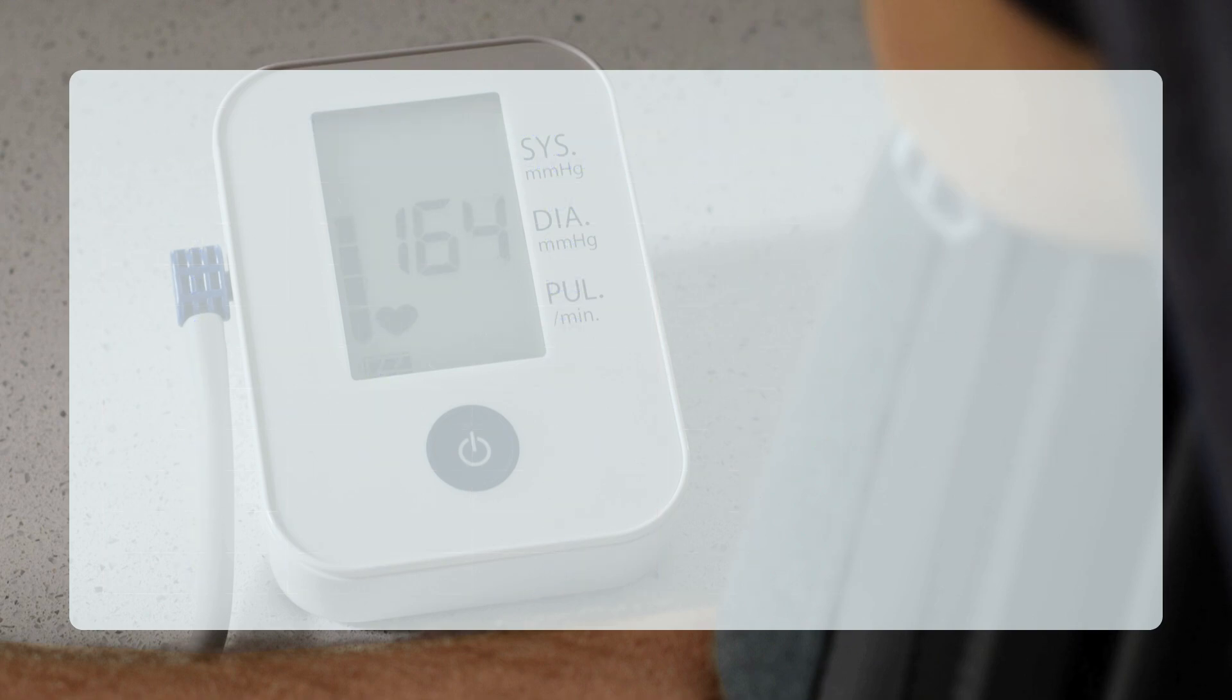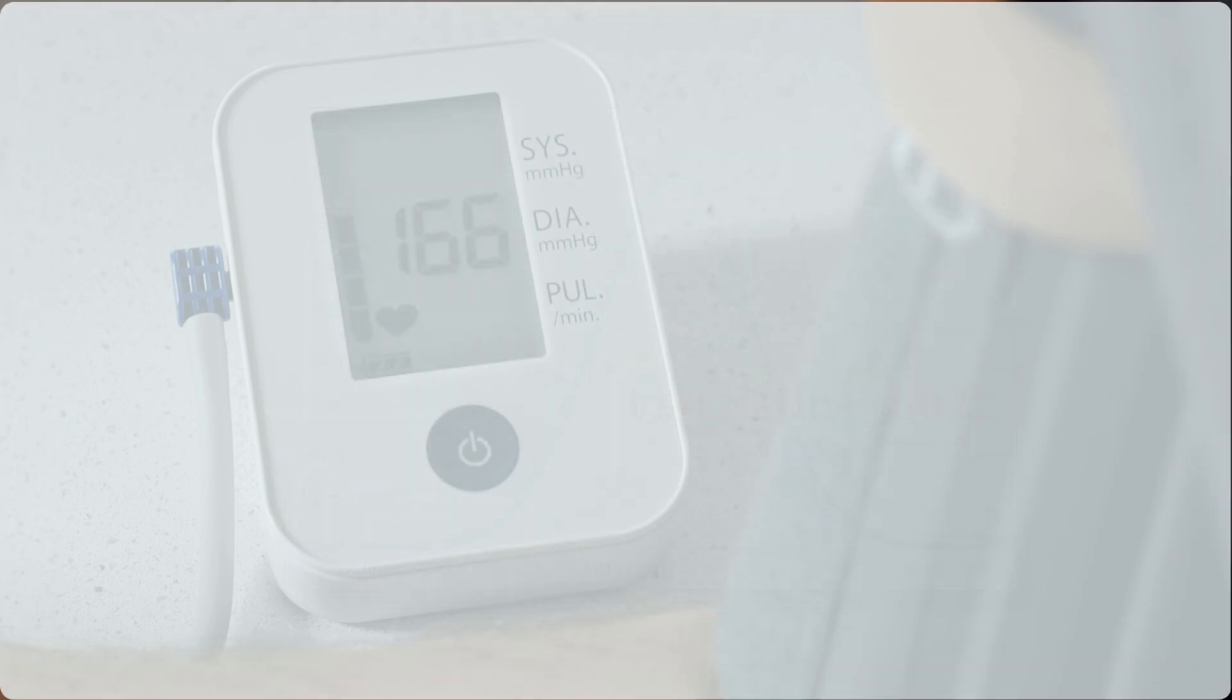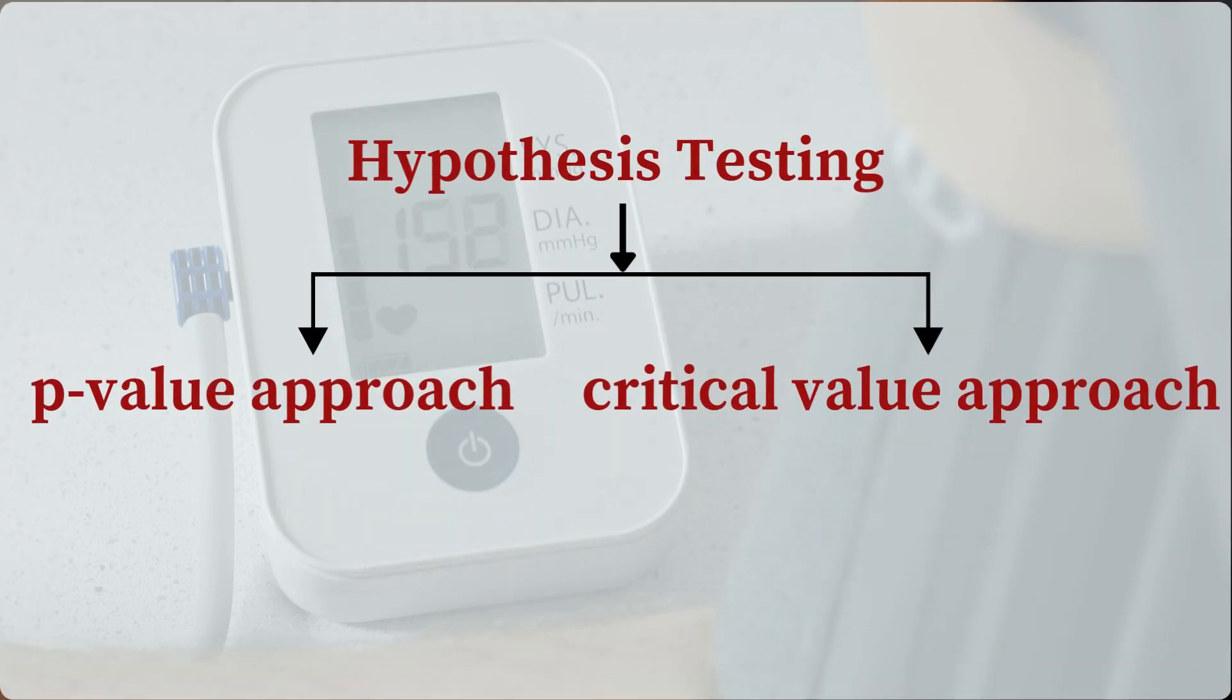The sampling distribution of that test statistic, under the assumption that the null hypothesis is true, would be used to determine the p-value or critical value for the hypothesis test. After defining the sampling distribution, the next step is to determine how to make a decision about the null hypothesis.